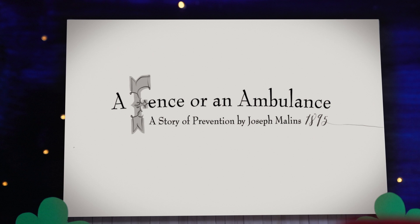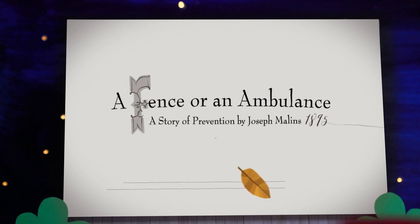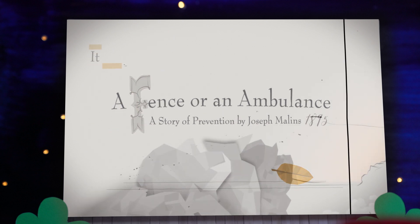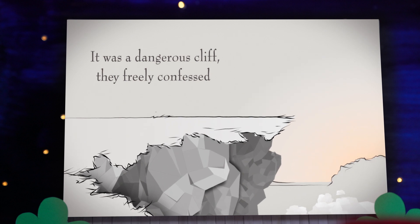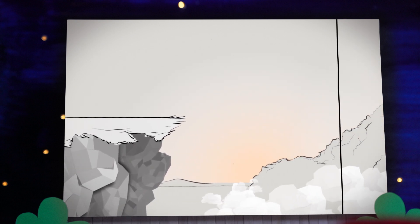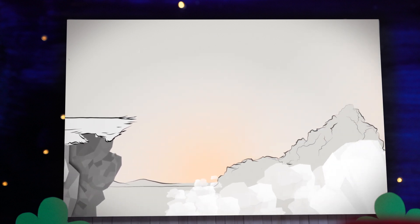Referring again to the story 'A Fence or an Ambulance: A Story of Prevention' by Joseph Mullins, 1895 — it was a dangerous cliff, they freely confessed. Here the SAGE identified the problem: people were falling off the cliff, and the current response of providing an ambulance did not prevent people from falling and being injured.